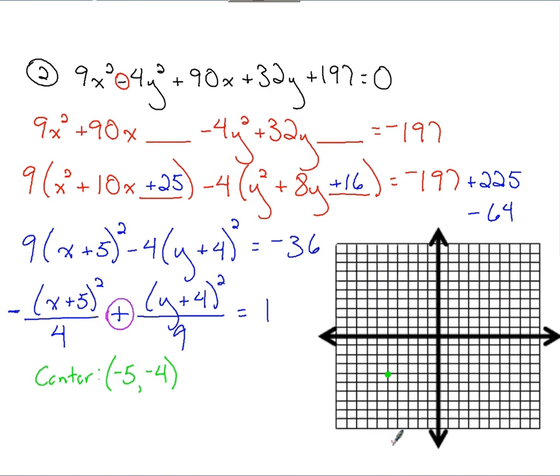So that takes into consideration this 9 as my a value, so to speak. So a is going to be the square root of that 9, which is 3. From this point, I'm going to go up 3 and down 3. That's setting up my vertices for the hyperbola.